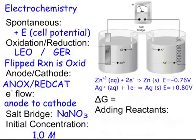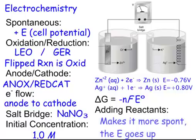And in order to find my E, all I have to do is, once I flip my reaction, add them up. And I can easily find my delta G, my Gibbs free energy, my spontaneity, by negative N, that's the number of electrons, F, which is that 96,500 number, and my E, the one that I add up. And remember, if I add reactants, it's going to make it more spontaneous. It's going to push it forwards, which means the E goes up more spontaneous.